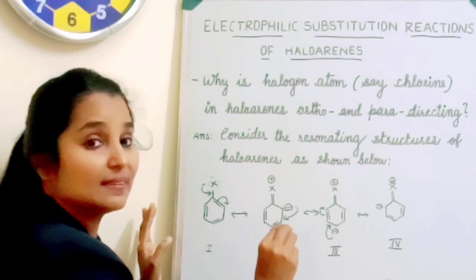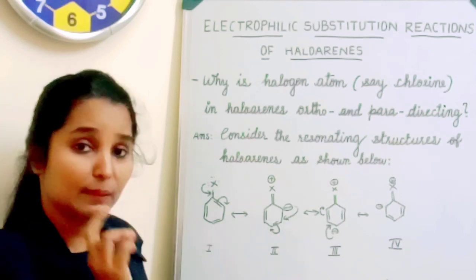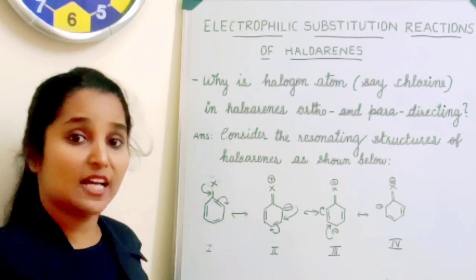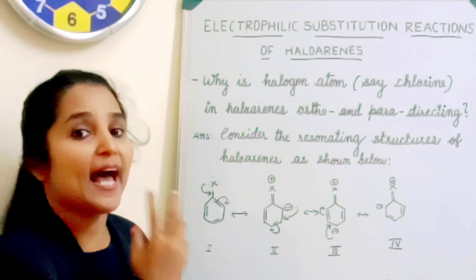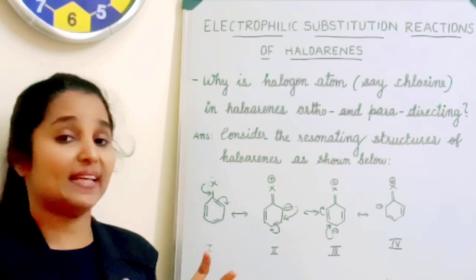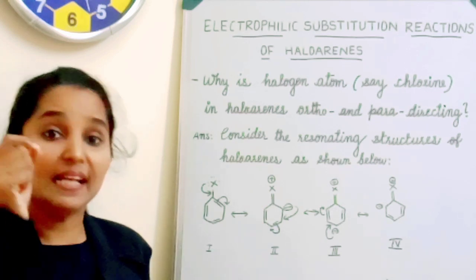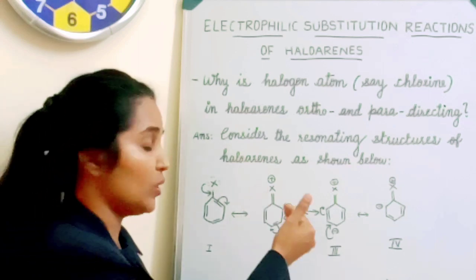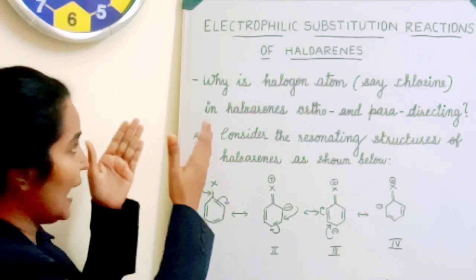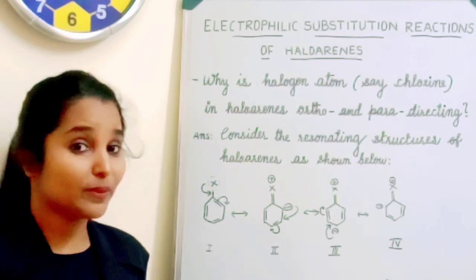So, haloarenes are ortho-para directing. These negative charges are accumulated during the process of resonance at the ortho positions as well as at the para position. Therefore, haloarenes are ortho and para directing — whenever an electrophilic attack happens, the electrophile attaches at the ortho and para positions. I hope that's clear.